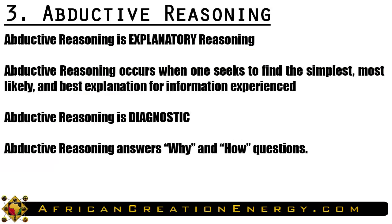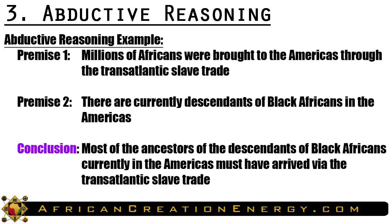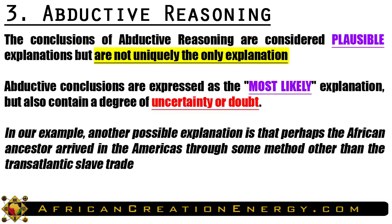The third form of reasoning we want to discuss is called abductive reasoning. Abductive reasoning is explanatory reasoning. It occurs when one seeks to find the simplest, most likely, and best explanation for information experienced. Abductive reasoning is diagnostic and answers why and how questions. For example: Millions of Africans were brought to the Americas through the transatlantic slave trade. There are currently descendants of black Africans in the Americas. Therefore, most of their ancestors must have arrived via the transatlantic slave trade. The conclusion attempts to explain how descendants of black Africans arrived in the Americas.